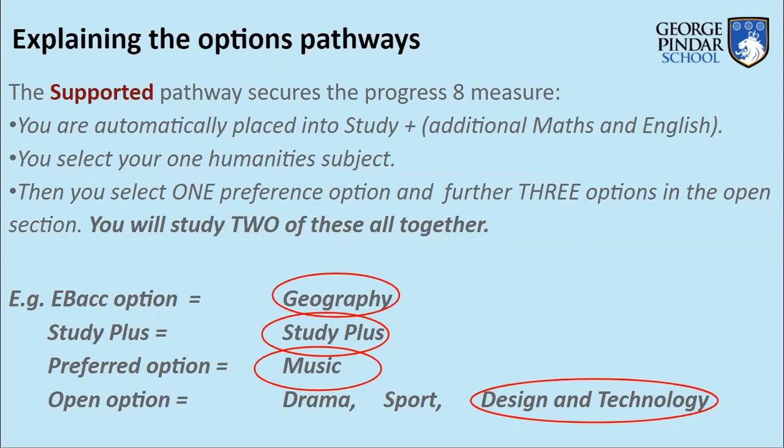Supported Pathway students also have a preference option — the subject you are most desperate to do, which we will try our hardest to give you. Then you choose three more subjects in the open option section, and you will study one of those on your timetable. They are not ranked — just three subjects you would be happy to study. So that's our Supported Pathway, with around 42 students on it.